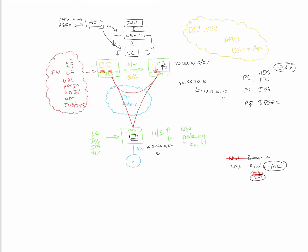To summarize NSX fundamentals: overlays between hypervisors, edge gateways providing layer 3 services, edge gateways bridging layer 2 broadcast domains, IP fabric simplification underneath, security embedded directly into the kernel, gateway services at the edge for north-south security, and AVI for load balancing. Key gaps to be aware of: NSX doesn't protect storage traffic, management traffic, or legacy port groups on the VDS — those remain unprotected.